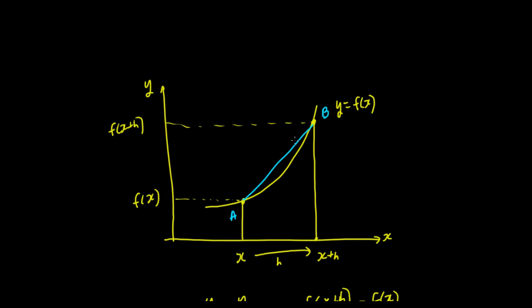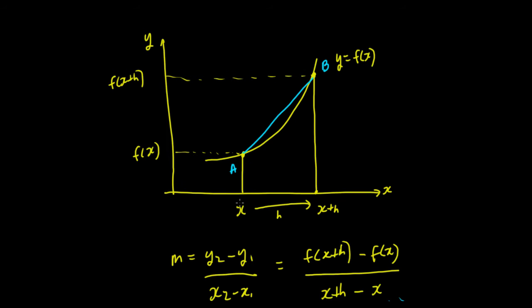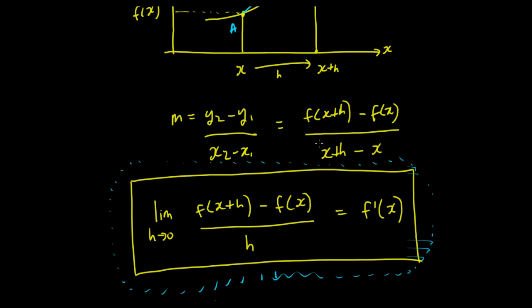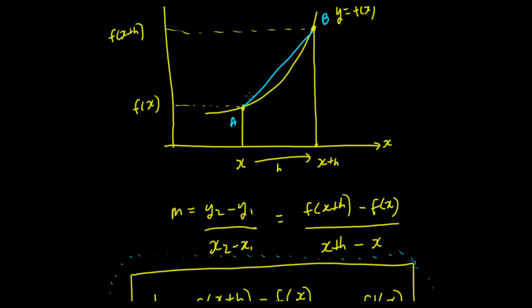So it means that the gradient of that chord there is going to be just the normal gradient, y2 minus y1 upon x2 minus x1. So y2 is f of x plus h, y1 is f of x, and x2 is x plus h, and x1 is x. So we can cancel out these two x's and we're left with f of x plus h minus f of x all upon h. So that there gives you the gradient of this chord.